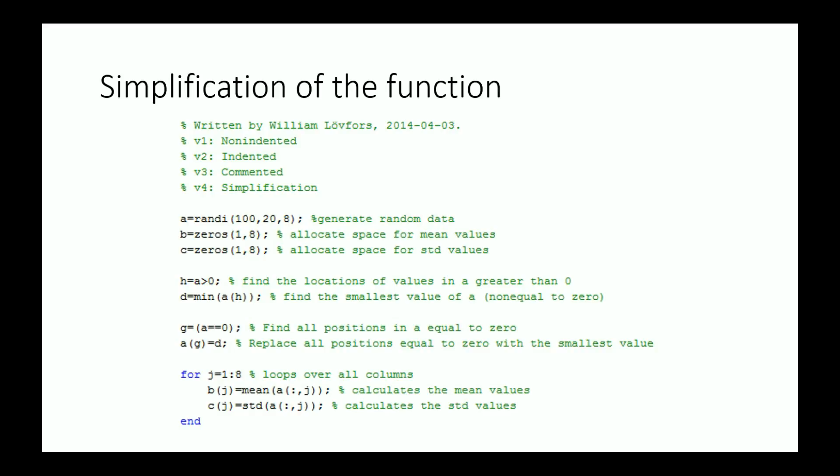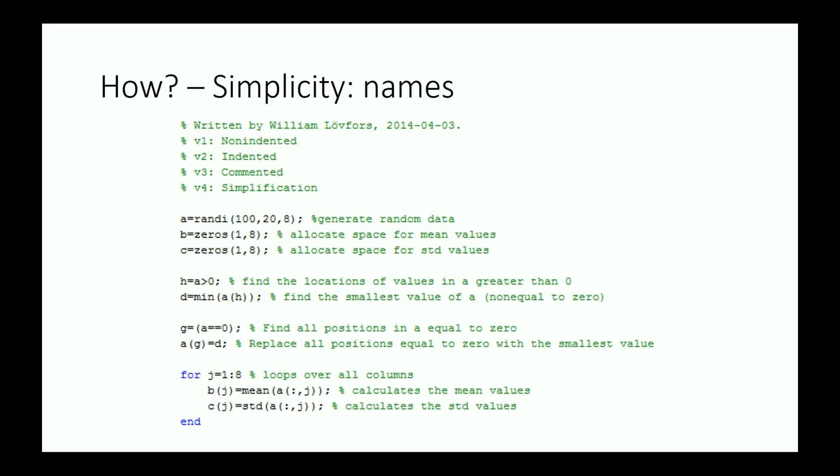So at the current state of the code, all variables have rather bad names. None really say what kind of information the variable contains. So for example, look at these variables. Having them named A, B and C is not really informative at all. More appropriate names could be for example this. So let's call A raw data and B call it mean values and C can be standard deviation values. So let's replace them.